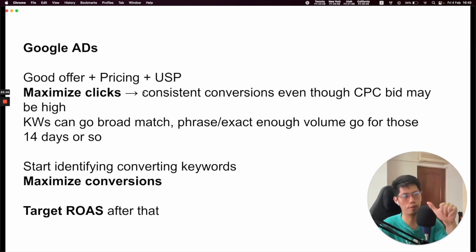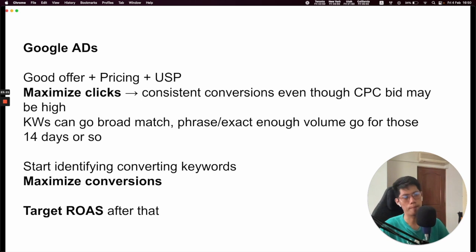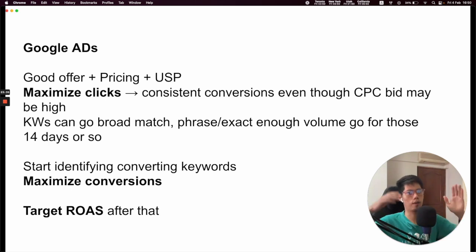For Google Ads: if you have a good offer, pricing, unique selling point, and all of that — Google Ads is still a very viable channel. Facebook is still very viable, but I have a lot of other videos that talk about it. On Google Ads, let me show you what I've been doing that I've seen work. A lot of times in the past I've learned about manual bidding — it gives you a lot of control, but sometimes it gets a bit expensive. Or if you're in a very, very tight niche, there's very little search volume.